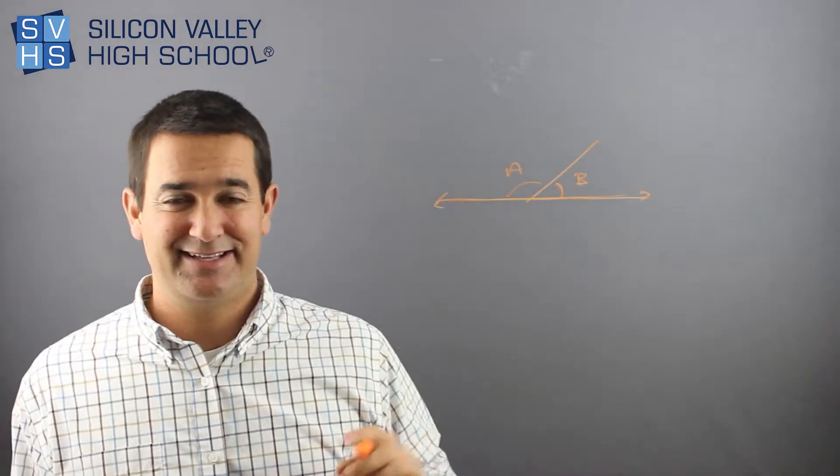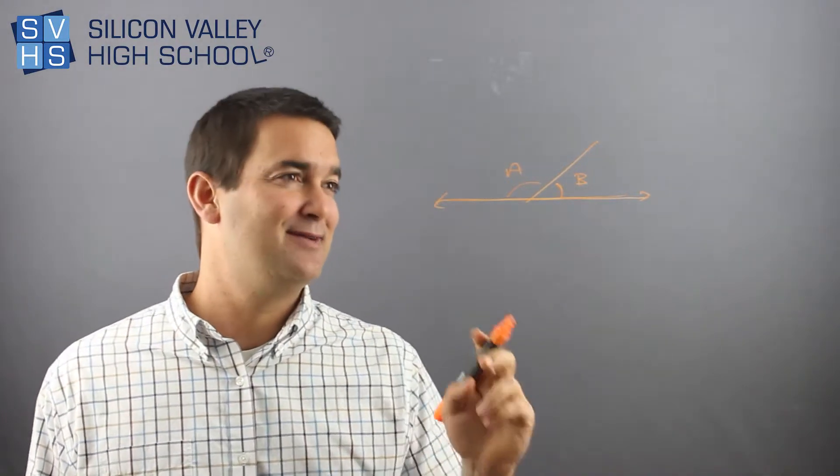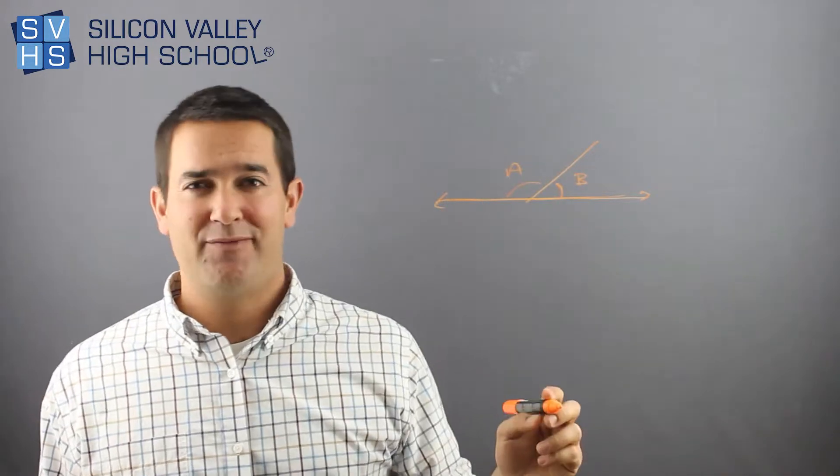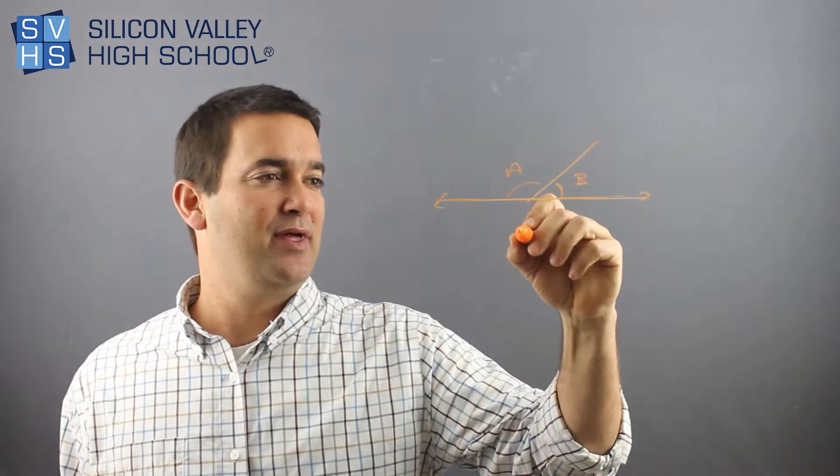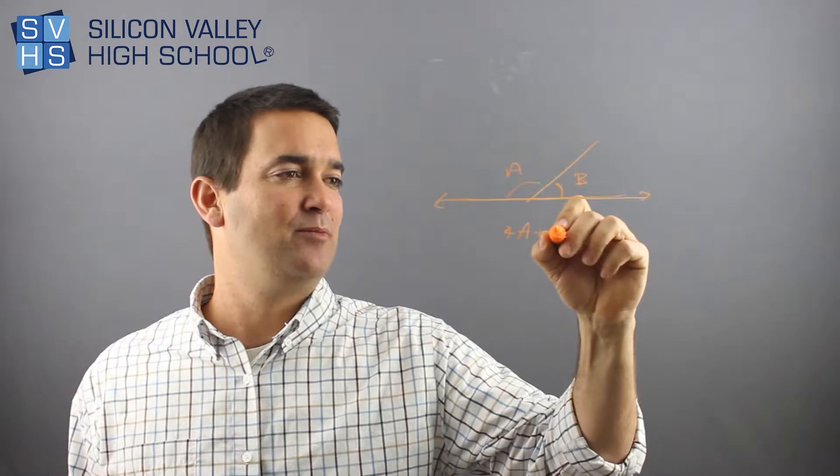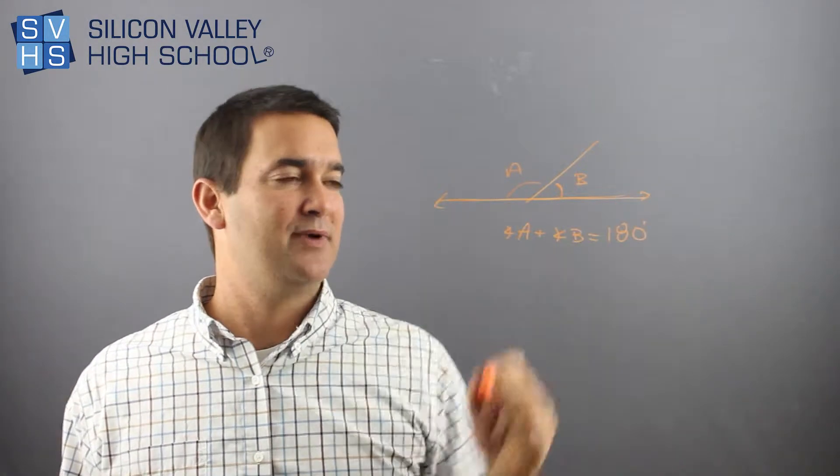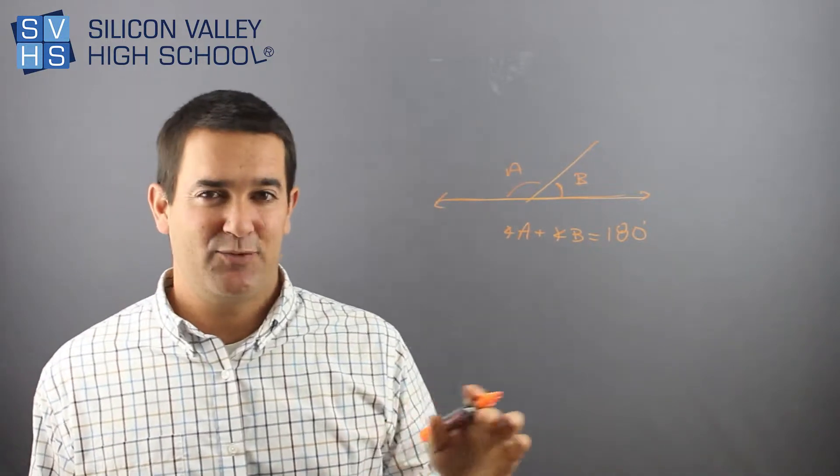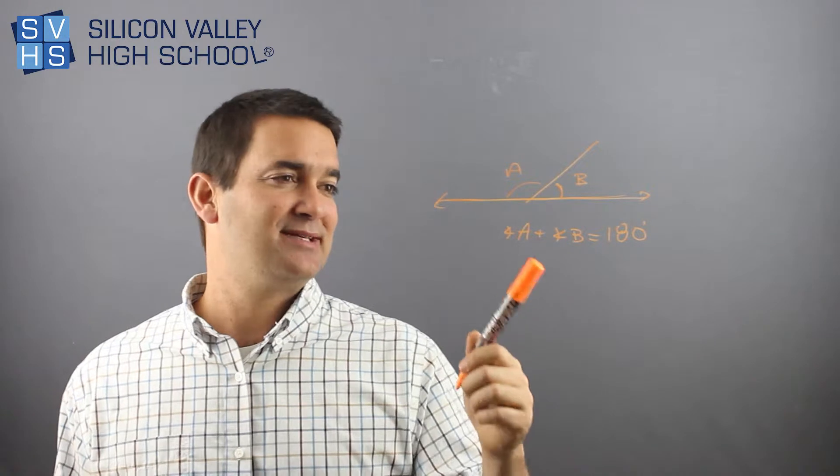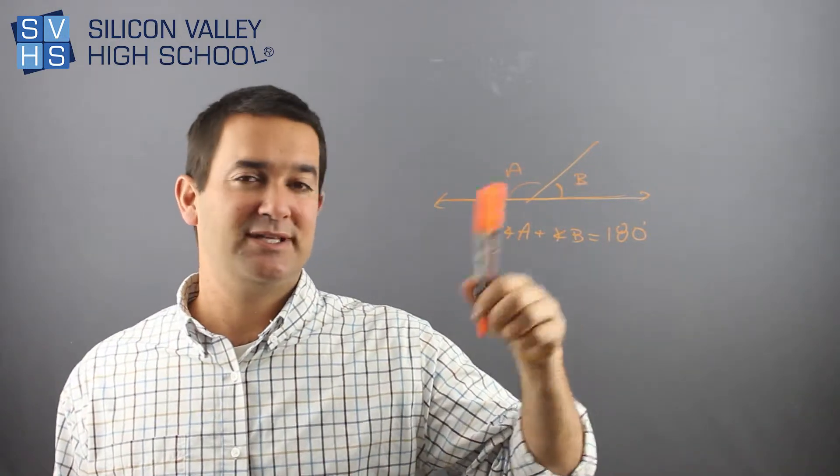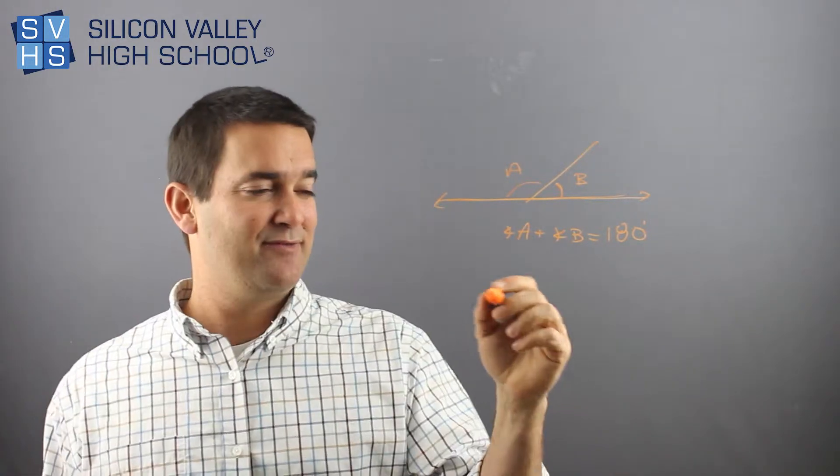I get that that's not totally exciting to hear, but actually the reason it's kind of important is that because these two form a straight line, you know that angle A plus angle B has to equal 180 degrees. And so there's a bunch of weird algebra questions they'll come up with. But at the end of the day, as long as you know that this guy plus this guy equals 180, it's pretty straightforward.